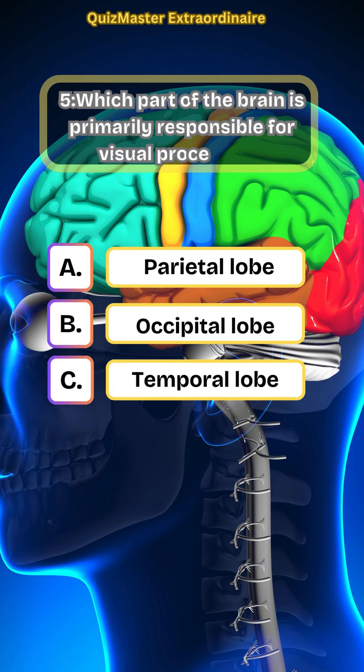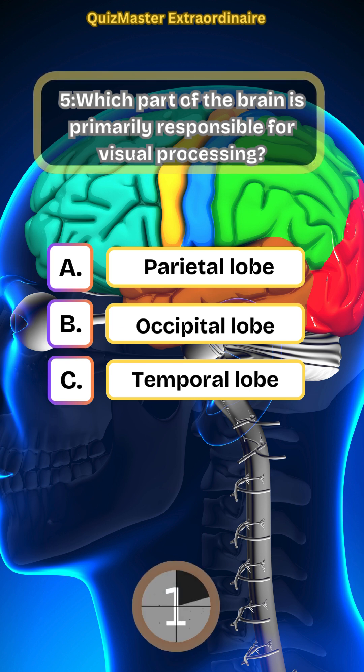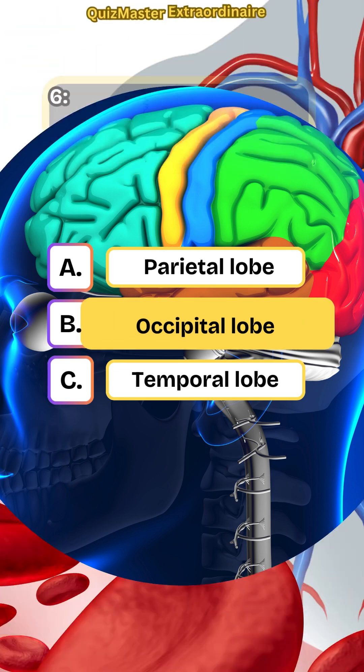Which part of the brain is primarily responsible for visual processing? Occipital lobe.